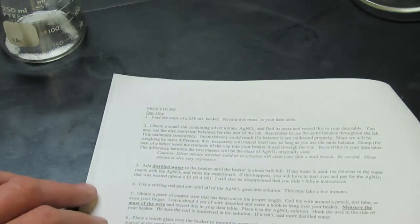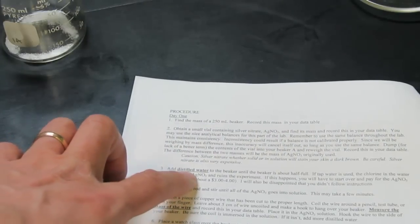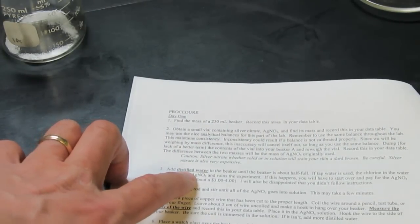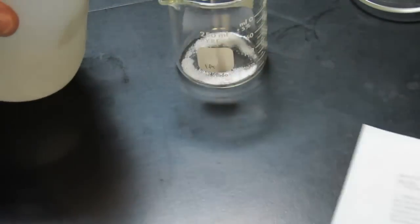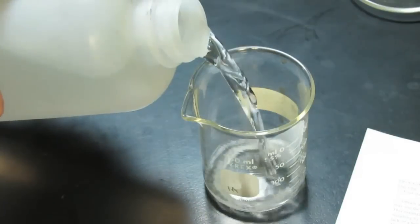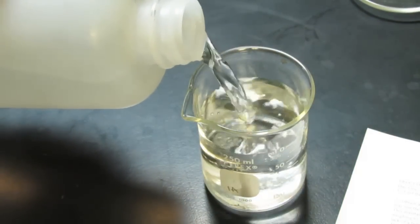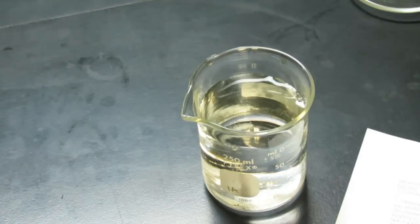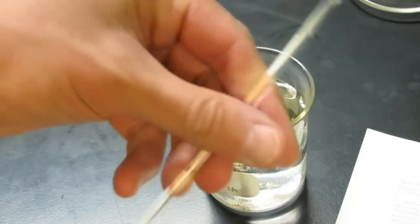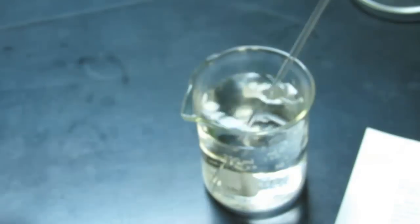Back to our instructions. Add distilled water to the beaker until the beaker is about half full. So we'll add some distilled water until it's about half full. You'll notice the silver nitrate will dissolve in the water, which is wonderful. All nitrates are soluble. We have a stirring rod to help the process along, and we'll get all of that silver nitrate dissolved in the water. We're going to set that aside for just a second.